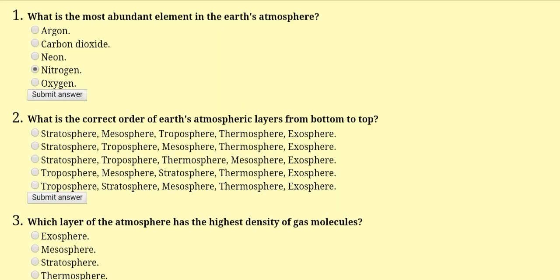Quiz on atmosphere. What is the most abundant element in the Earth's atmosphere? Nitrogen is present abundantly in the Earth's atmosphere.